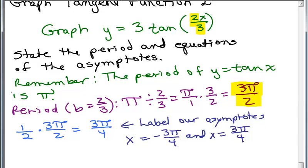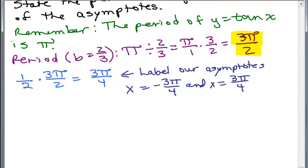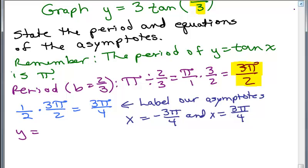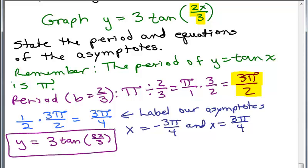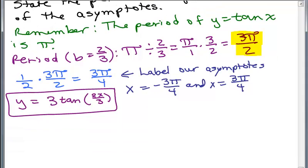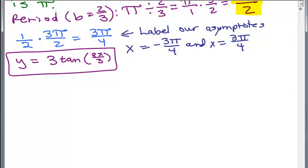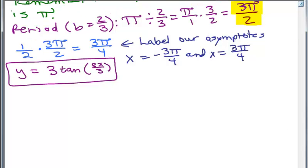So let's see what that looks like. Keep in mind this is the function we've got, 3 tangent of 2x over 3. Just keep in mind that's what we're graphing. So we've got a period. We have our asymptotes. They are right here.